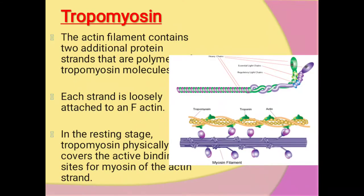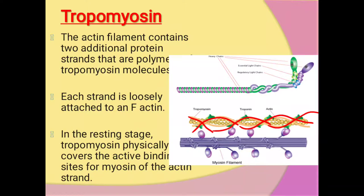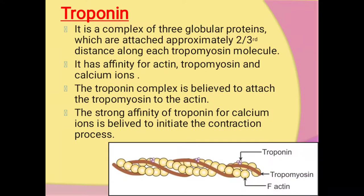Now let us study about tropomyosin — the thread-like, double-helix thread-like structure present in the actin filament. The actin filament consists of two additional protein strands that are polymerized tropomyosin molecules, each strand loosely attached to an F-actin. In the resting stage, this tropomyosin physically covers the active binding sites for myosin on the actin strand.